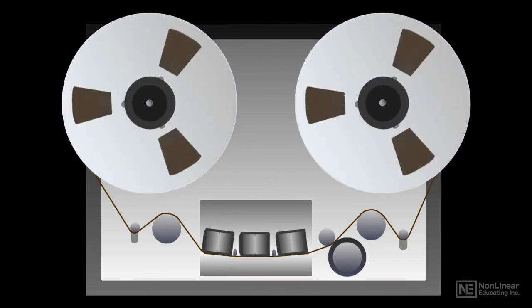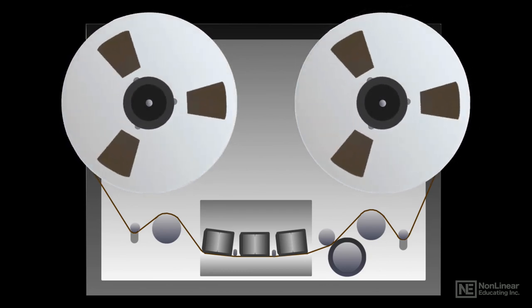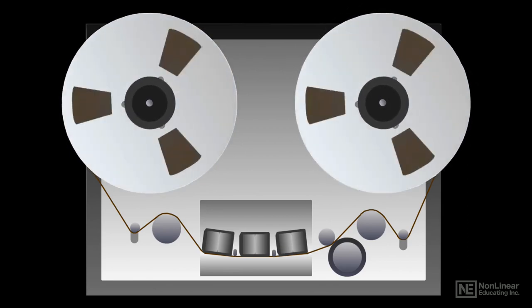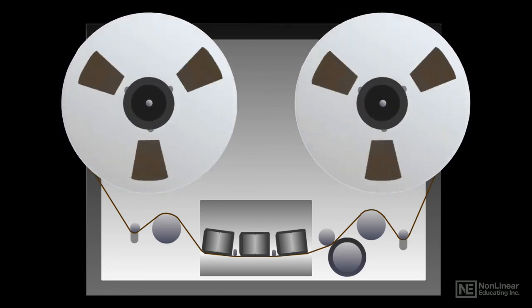Smaller or semi-pro recorders might operate at 15 or 7.5 IPS. 30 IPS provides the best high-frequency response and greatest freedom from audible dropouts, but eats up a lot of expensive open-reel tape, especially in multitrack recording, and requires more robust motors and mechanicals to handle the tape at the higher speed reliably. 15 IPS is a good alternative and offers slightly better low-end response.